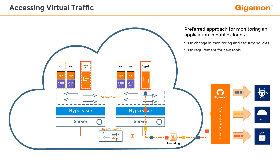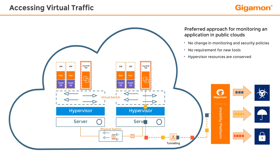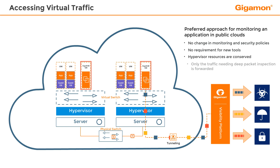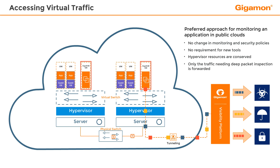Also, this approach makes sure the hypervisor resources are conserved and made available to the virtual machines performing the workload. To further limit the use of hypervisor resources, the traffic which does not require deep packet inspection may be sliced by Gigaview VM before they are forwarded to the physical network.